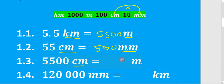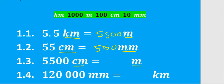For 1.3 we want to go from centimeters to meters. As you can see, now you're going backwards, so you're going to have to divide. If we take 5500 and divide it by 100 it gives us 55.